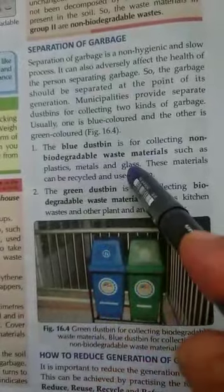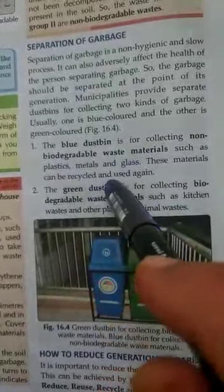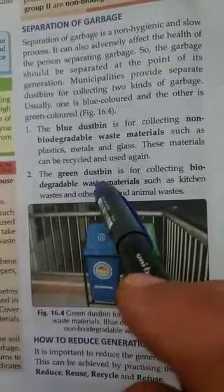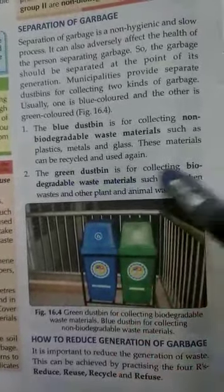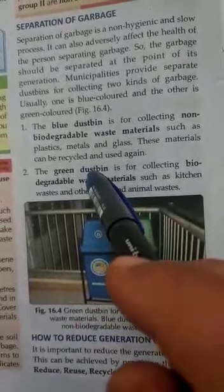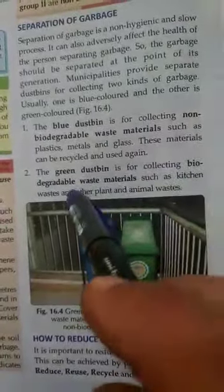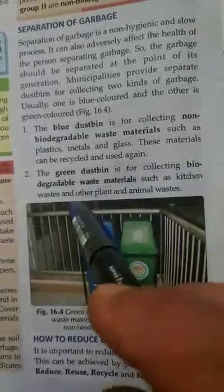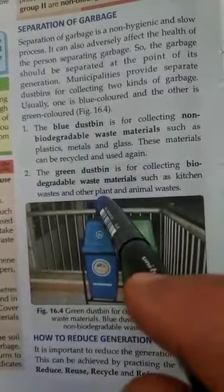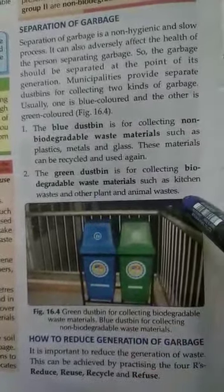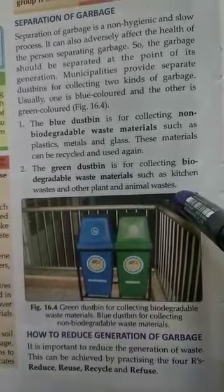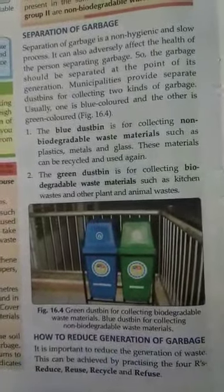The green dustbin is for collecting biodegradable waste such as kitchen waste and other plant and animal waste — for example, fruit peels or animal waste. That is all for today; in the next class we will read about how to reduce the generation of garbage.